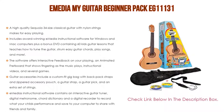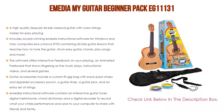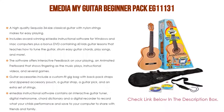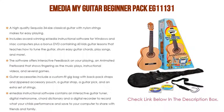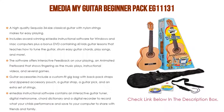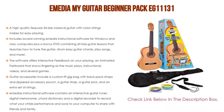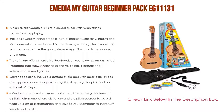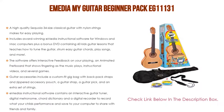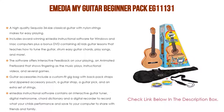Guitar accessories include a custom-fit gig bag with backpack straps and zippered accessory pouch, a guitar strap, a guitar pick, and an extra set of strings. eMedia's instructional software also contains an interactive guitar tuner, digital metronome, chord dictionary, and a digital recorder to record your child's performance and save it to share with friends and family.